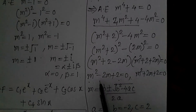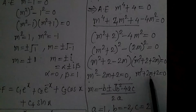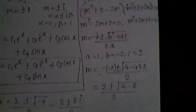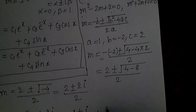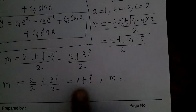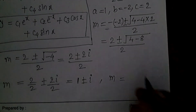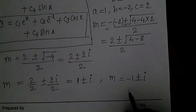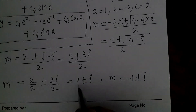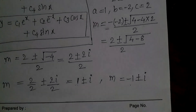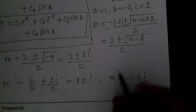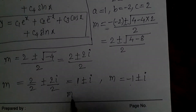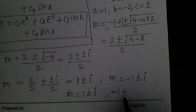For the second equation m² + 2m + 2 = 0, only b changes from -2 to +2. So the solution becomes m = -1 ± i. We now have two pairs of complex roots: 1 ± i and -1 ± i.